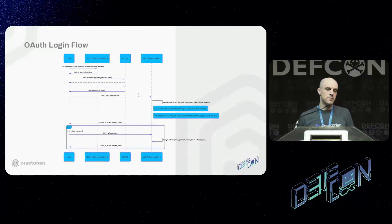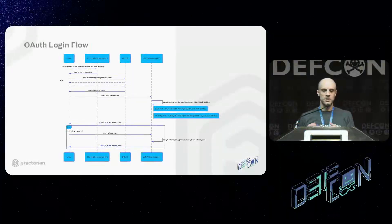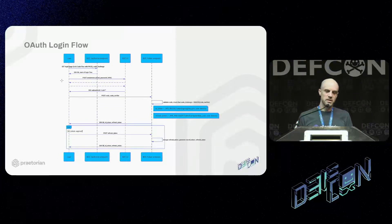Once you set it up, your environment gets configured with this OAuth login flow. You get your login page, post your credentials — email, password, MFA — and once you've completed authentication you get a code, submit it to the token endpoint, and it provides you with an ID token and a refresh token. Later in your session, when your ID token expires, you can present your refresh token and get a new ID token and a new refresh token. The format of the ID token is a JWS signed with that signing key you configured. The format of the refresh token is a JWE encrypted with that encryption key you set up.